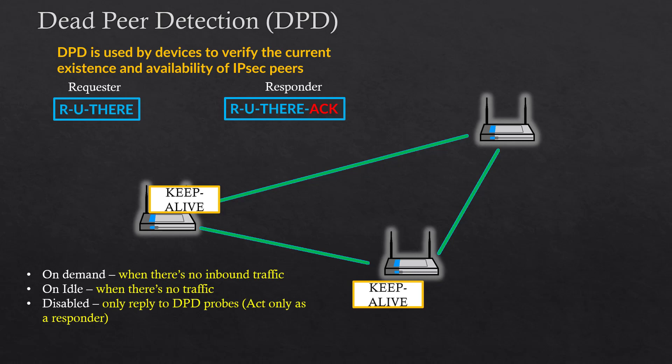There are several options, and these options differ from vendor to vendor. Some vendors don't even have an option to disable DPD or any variation of DPD. The three most common options you'll come across when working with VPN are on-demand, on-idle, or disabled. I want to point out that if you have DPD enabled on one side, the parameter has to match on the other side. If you have DPD enabled on one side and disabled on another, it might cause problems.